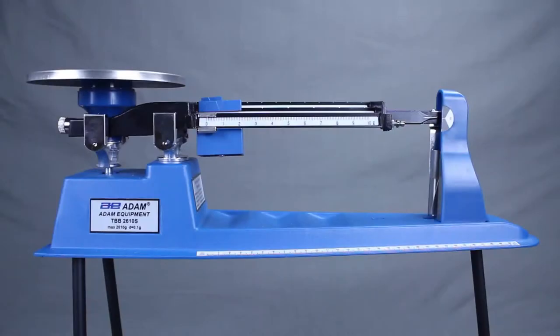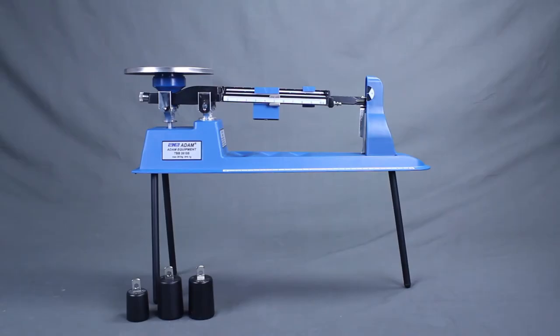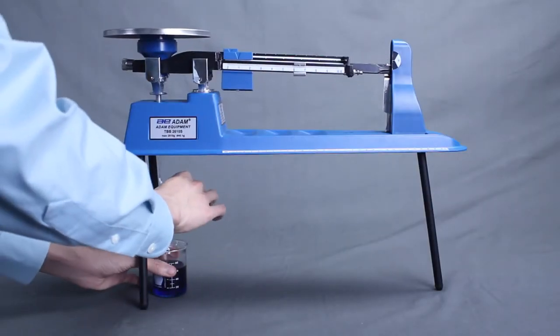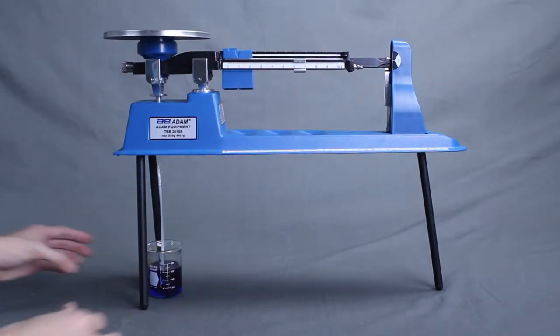The TBB 2610S includes weights to take the balance to its capacity of 2,610 grams, while tripod legs facilitate specific gravity calculations.